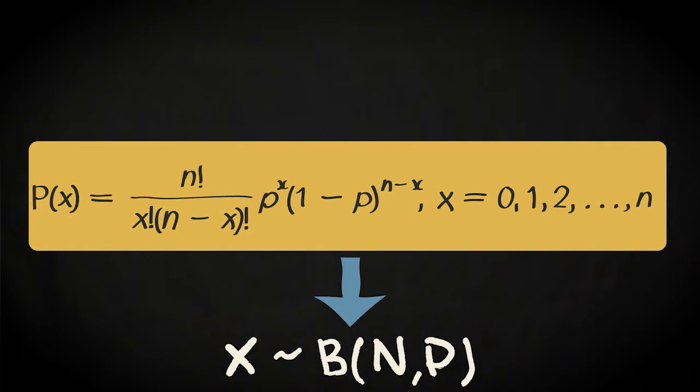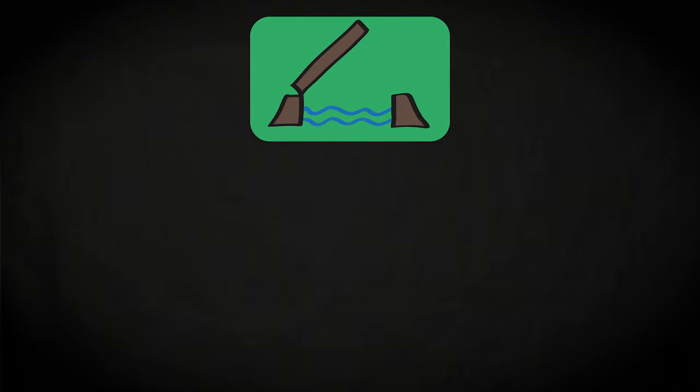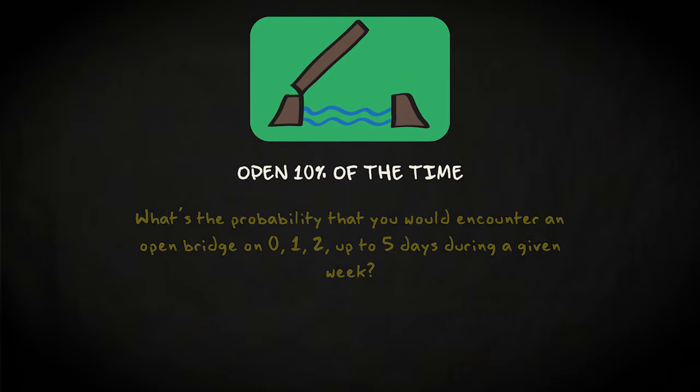Now let's apply the binomial formula to a specific example. Once, every day, you travel along a route where you have to pass a bridge. The bridge is open 10% of the time but the exact moments of its opening are random. What's then the probability that you would encounter an open bridge on 0, 1, 2, up to 5 days during a given week?